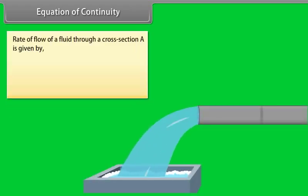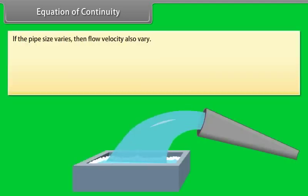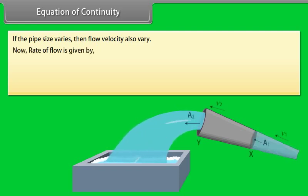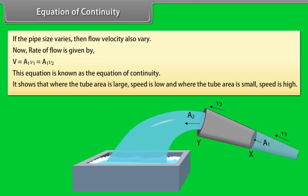Equation of continuity. Rate of flow of a fluid through cross-section A is given by V equals AV, where V is velocity of the fluid and capital V is volume of the fluid. If the pipe size varies, then flow velocity also varies. Now, rate of flow is given by V equals A1V1 equals A2V2. This equation is known as the equation of continuity. It shows that where the tube area is large, speed is low, and where the tube area is small, speed is high.